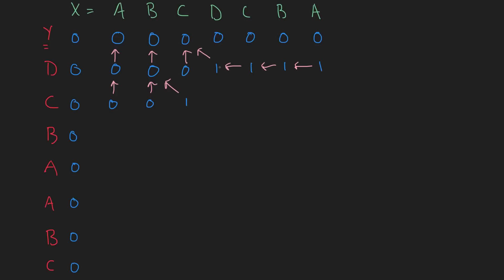We point to where we got that one from. Now we have C and D — not the same — so we take the upper one, which is one, and point to it. Then C and C again — these are the same — so we add one to the diagonal, giving us two, and point to where we got that from. C and B are not the same, so we take the larger of the two, which is two. C and A are not the same, so again we take the larger, which is two.